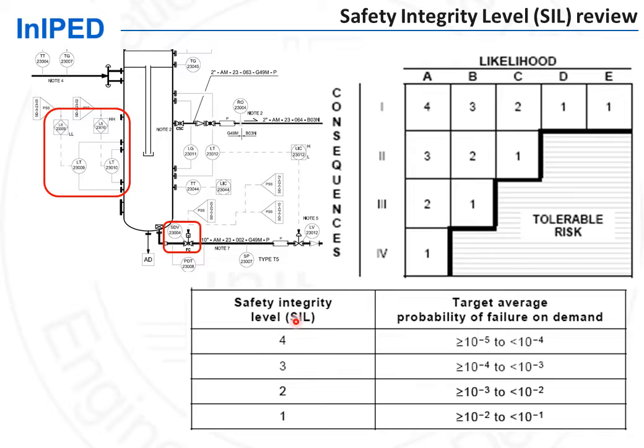If the safety instrumented function is specified a SIL rating, then it will be subject in a second step to a thorough review of the type of equipment — such as the sensor, the controllers, and the final element — and their probability of failure, so that the overall loop, the overall instrumented safeguard, provides the adequate probability of failure on demand. This is called the SIL review.